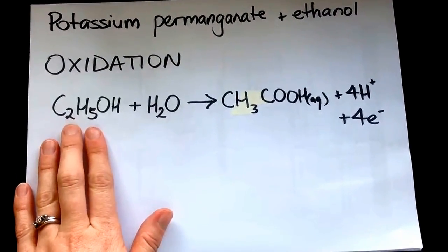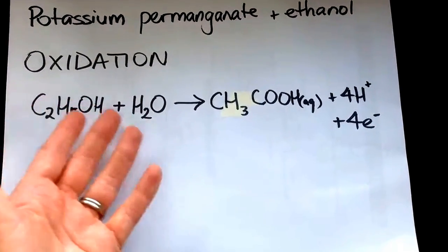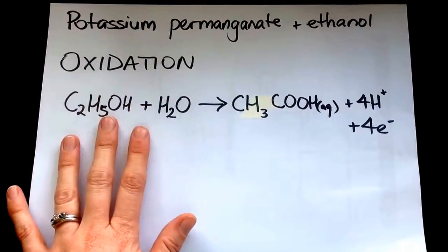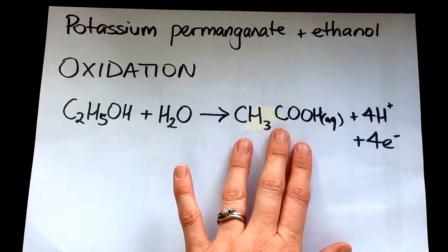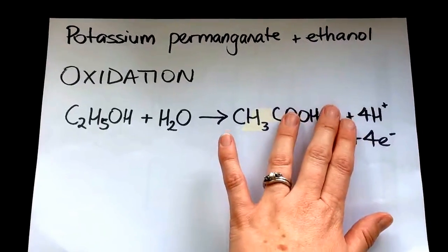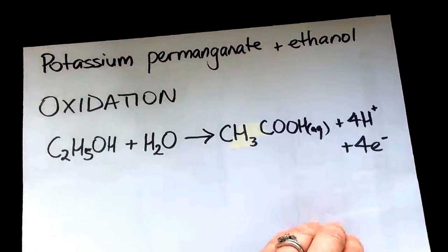Here we have ethanol. And if you get ethanol plus the water, it's in an aqueous solution. I haven't written all the states, but that's what's happening there. You basically oxidize this to produce acetic acid, CH3COOH. And in that process, you produce four hydrogen ions and four electrons are released.